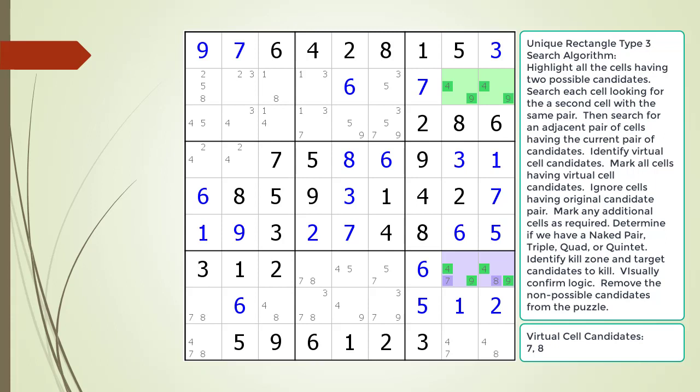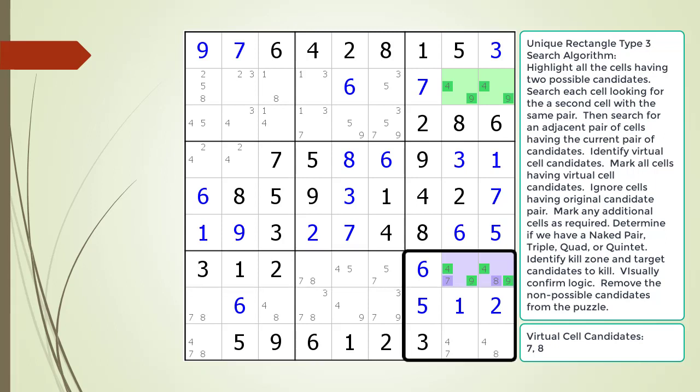Next, we look for a naked pair, triple, quad, or quintet in the houses shared by the two cells highlighted in purple. In this example, we are looking in the house making up row 7 and the house making up block 9. Cell 7,4 together with our virtual cell form a naked pair with the possible 7 and 8 candidates.